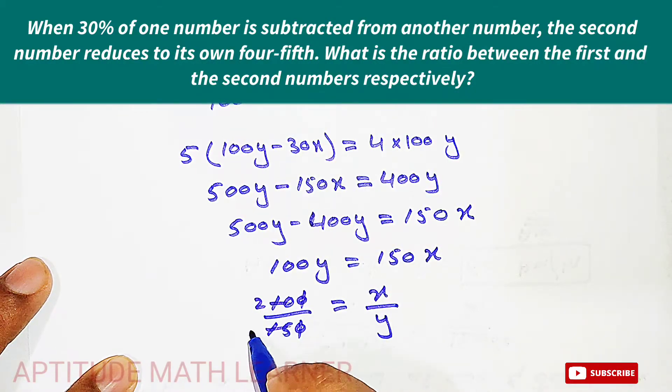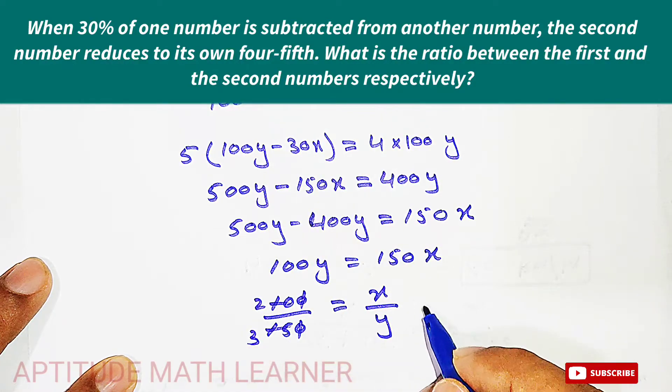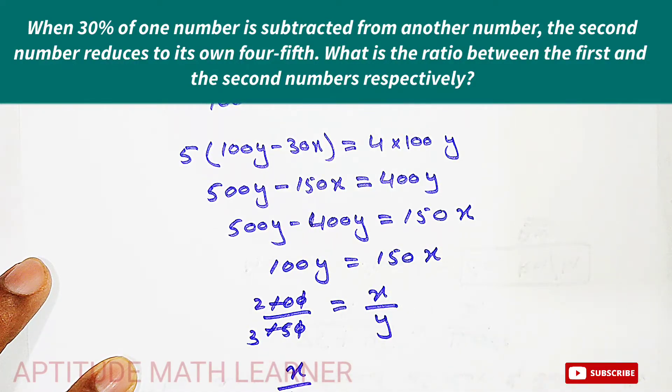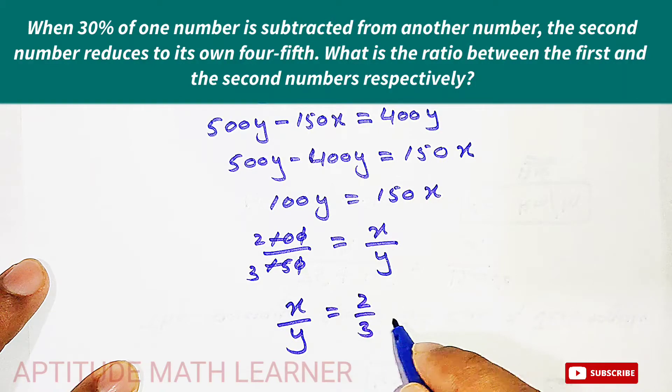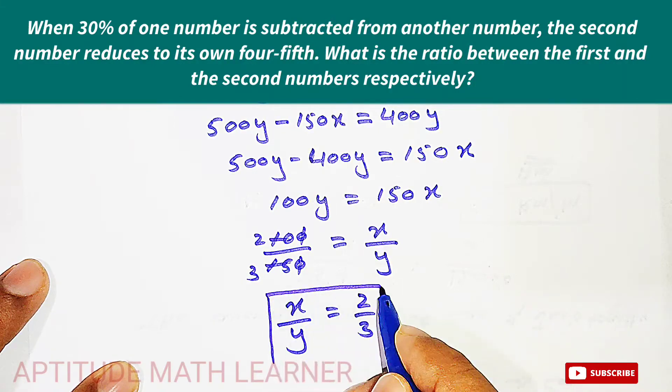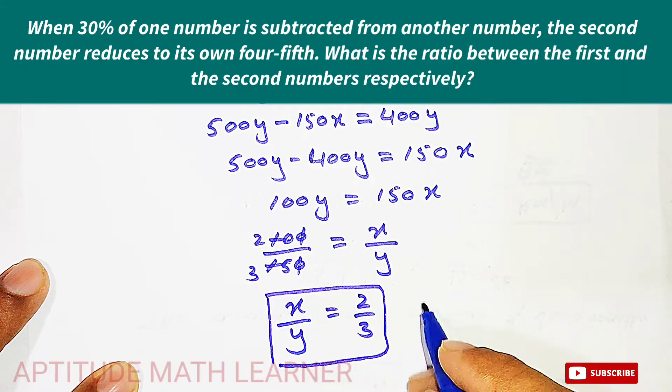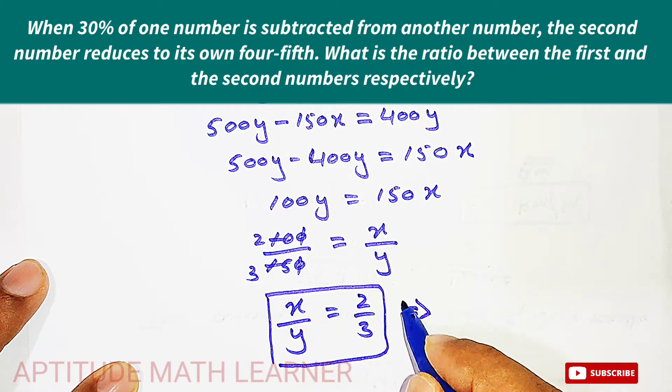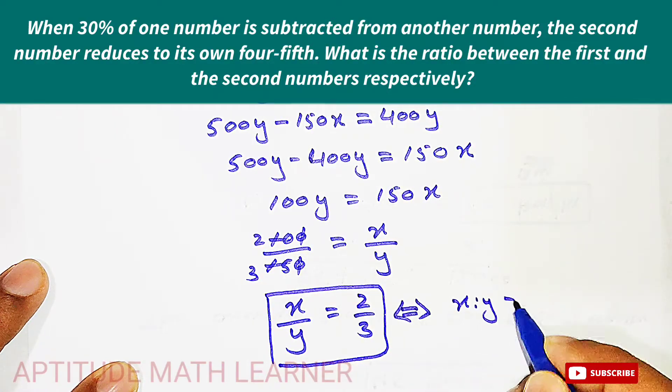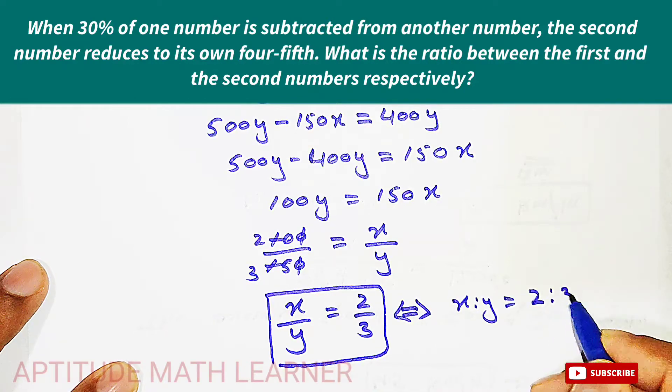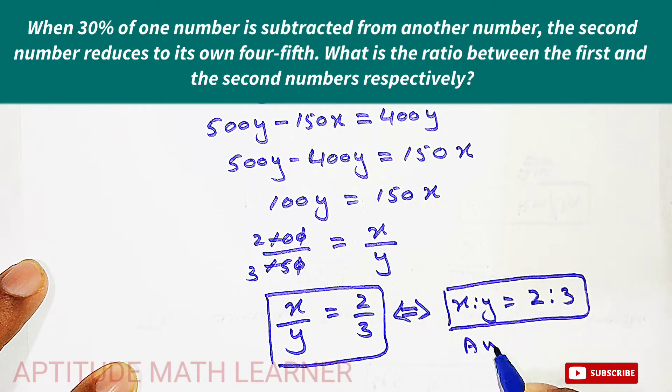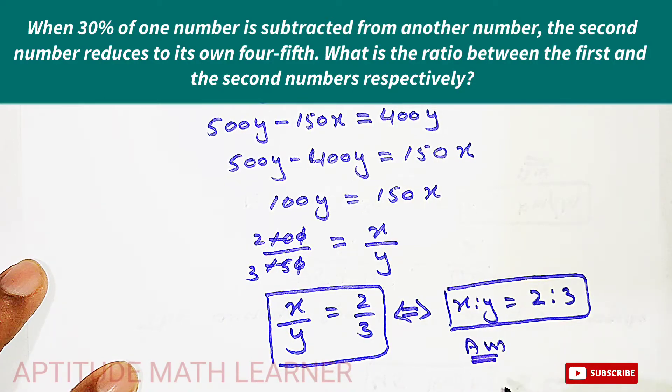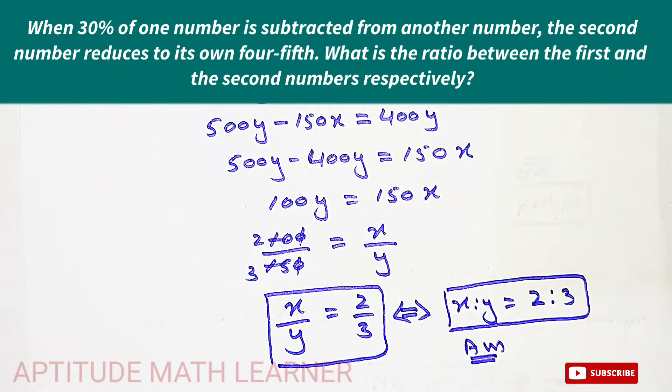So this is the ratio, or we can also write it in this form as well: x ratio y is equal to 2 ratio 3. This could also be the answer, so these are our answers. I hope you have completely understood. Thank you very much.